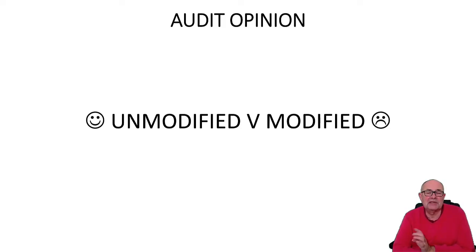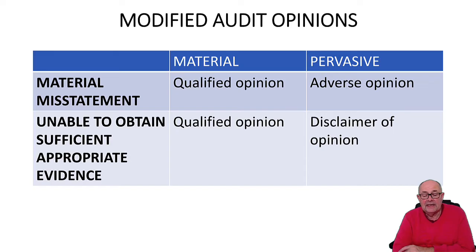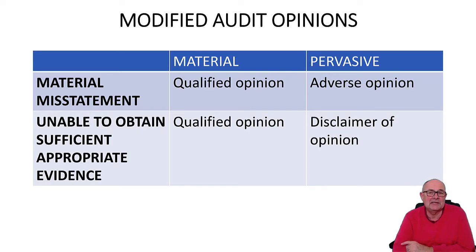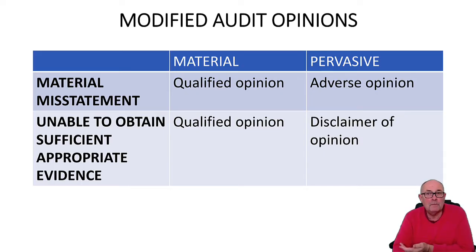There are two circumstances in which opinions may be modified. One is if the auditor has not been able to obtain enough evidence, and the other is if the financial statements are materially misstated. Inability to obtain evidence would mean, for example, a lack of accounting records, or refusal to cooperate, perhaps not providing a letter of representation. Material misstatement is self-explanatory — the numbers in the accounts are materially wrong, or perhaps the disclosures or the descriptions.